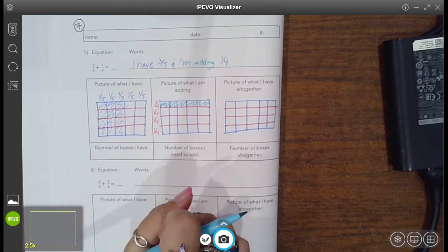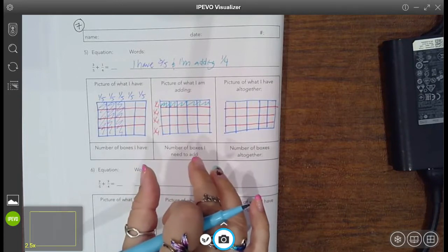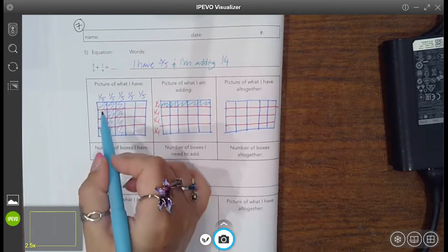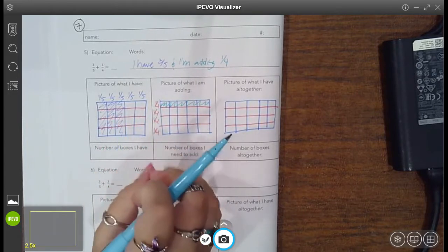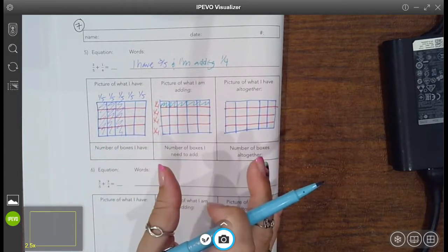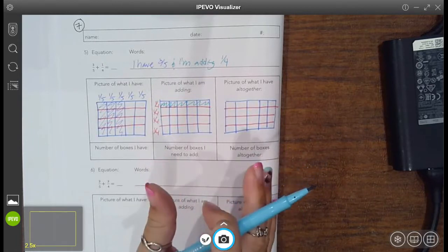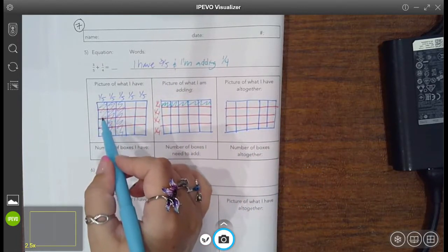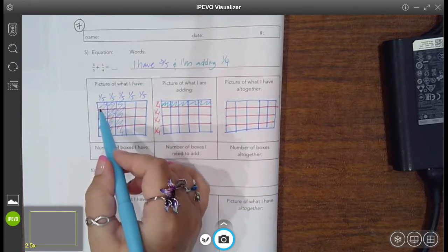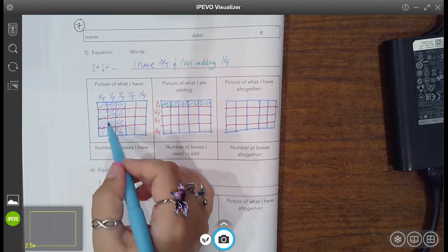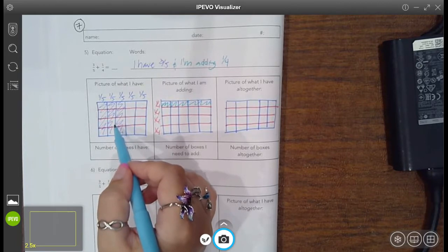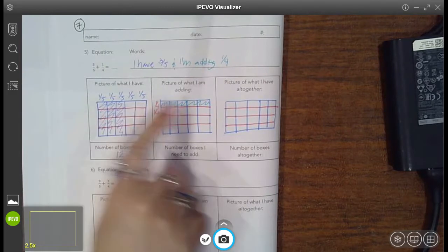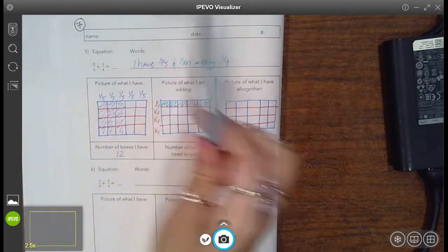Now the problem is that when you do that, do you notice that in reality, they actually are little teeny tiny little boxes that are all now the equal size. Imagine that I drew it perfectly and they are actually identical. How many little identical boxes here got shaded? One, two, three, four, five, six, seven, eight, nine, 10, 11, 12 little boxes got shaded here. And how many little tiny boxes got shaded there?